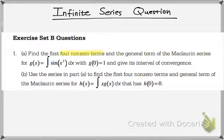Pretty much we're going to find the first four non-zero terms and the general term from the Maclaurin series, so the center is at zero, and we're given g(x) is the integral of sin(x²), and we have an initial condition, and then we have to specify the interval of convergence.